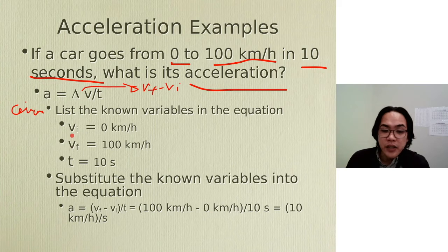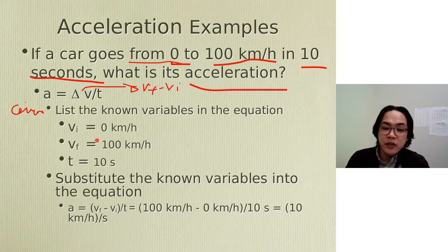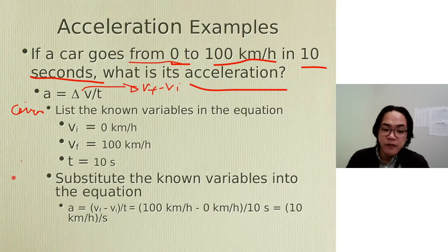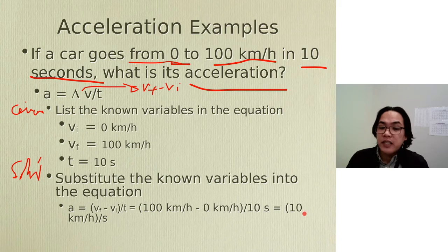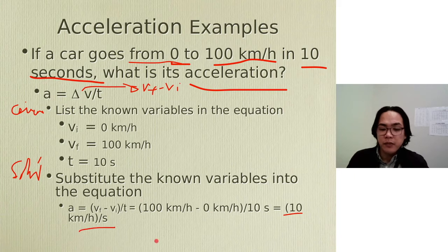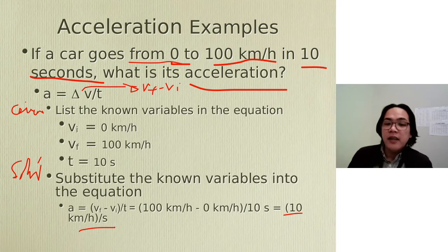List the given numbers: your initial velocity VI is 0 because it says 'from 0' — that is your starting velocity. Your VF is 100 kilometers per hour, and your time is 10 seconds. For the solution, substitute the known variables into the equation: VF minus VI divided by T equals 100 km/h minus 0, which gives 100 divided by 10, equals 10 kilometers per hour per second. We don't cancel out units — we just copy them. So your final answer is 10 kilometers per hour per second, which is the acceleration of the car.